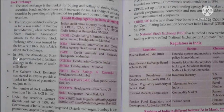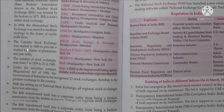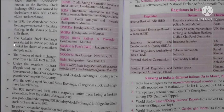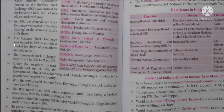In 1894, the Ahmedabad Stock Exchange was started to facilitate dealings in shares of textile mills. The Calcutta Stock Exchange was started in 1908 to provide a market for shares of plantation and jute mills. The number of stock exchanges rose from 7 in 1939 to 21 in 1945. Under the Securities Contract Regulation Act of 1956, the Government of India has so far recognized 23 stock exchanges. Bombay is the premier exchange in the country. With the setting up of the National Stock Exchange, all regional stock exchanges have lost relevance.